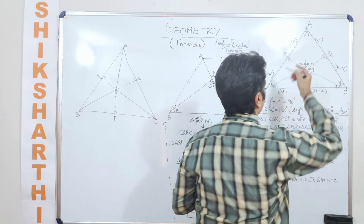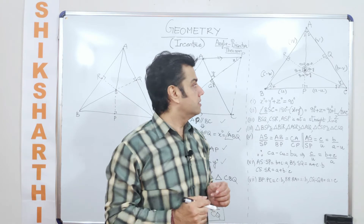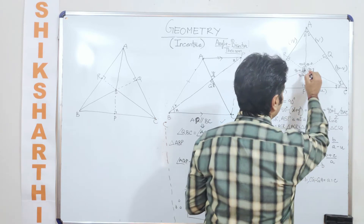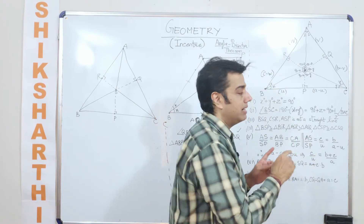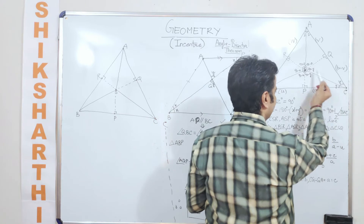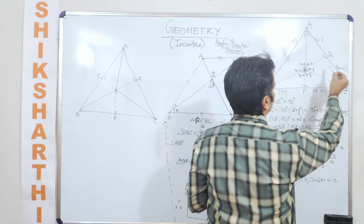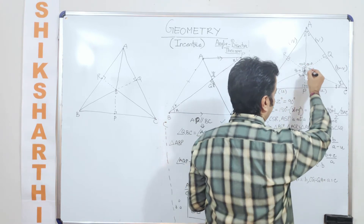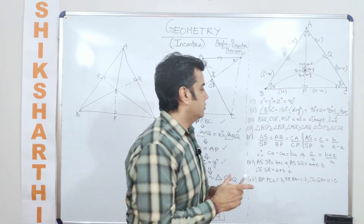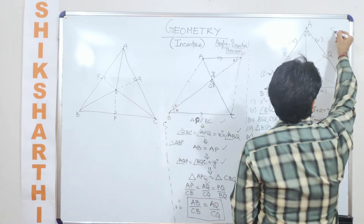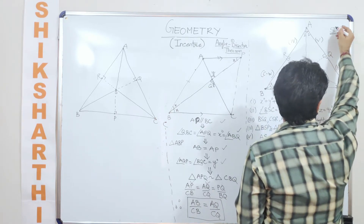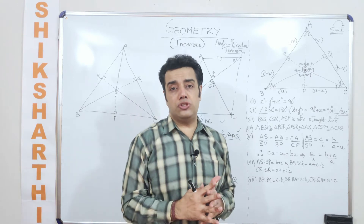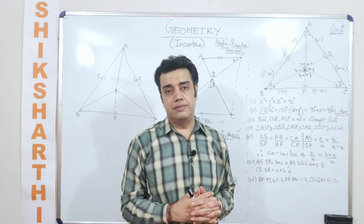We are talking about triangle ABC such that angle A, angle B, and angle C are being bisected. BS is a line segment bisecting angle B, CS is a line segment bisecting angle C, and AS is a line segment bisecting angle A. From point S, which acts as the incenter — S is nothing but I, the incenter — formed because of the intersection of the three angle bisectors at S.